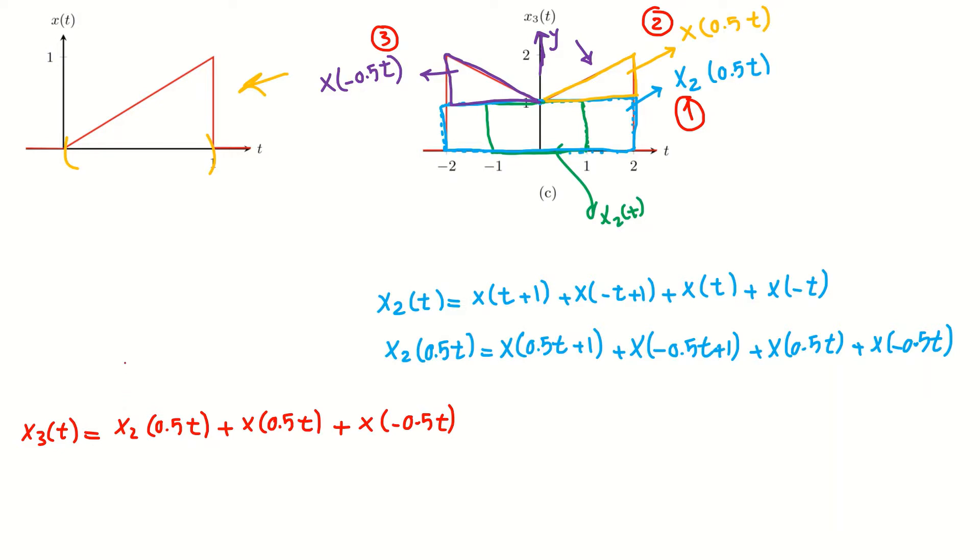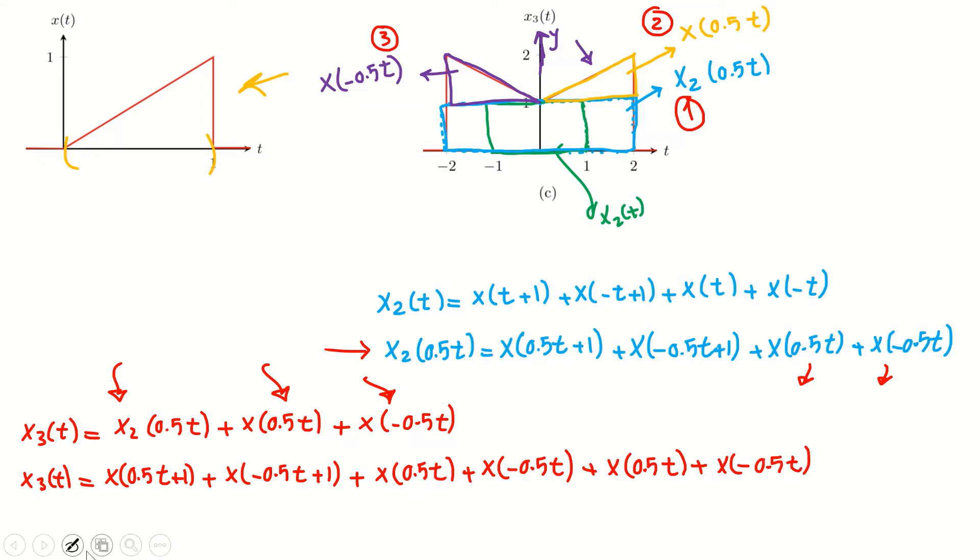0.5t, plus part 3, which is X of minus 0.5t. And we're supposed to write X3(t) based on X(t) only, so I should replace this X2(t) by this here. So we would have X3(t) equals X of 0.5t plus 1, plus X of minus 0.5t plus 1. I'm writing these guys all here one by one. So we would have X of 0.5t plus X of minus 0.5t.